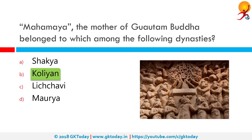The Sakya and Kolia ruled on opposite banks of the Rohini river in the current Rupandehi district of Lumbini, Nepal. Both of them were republics.